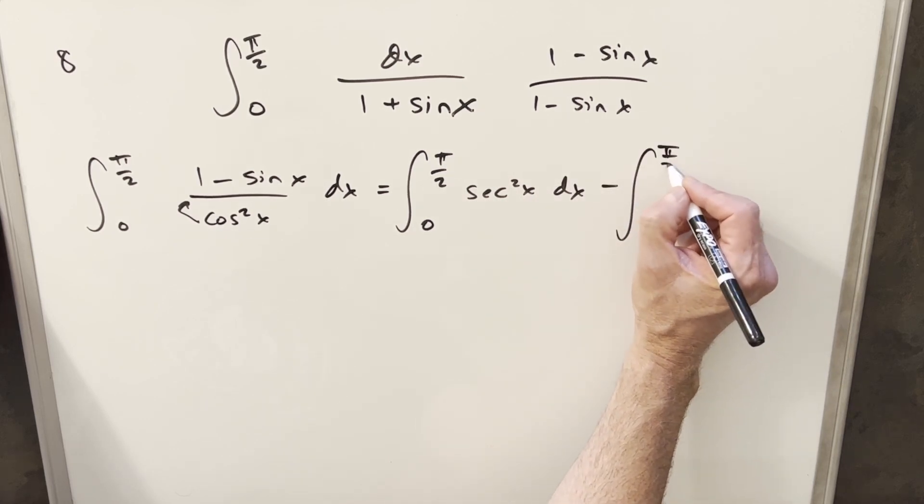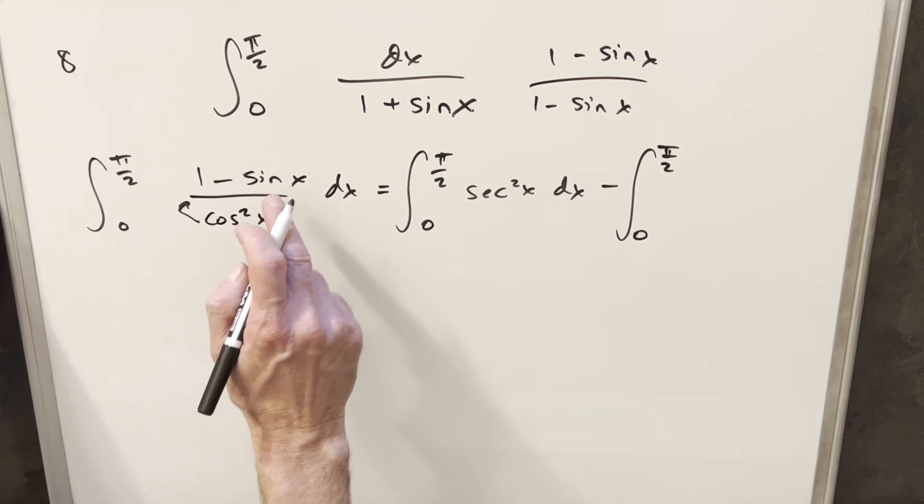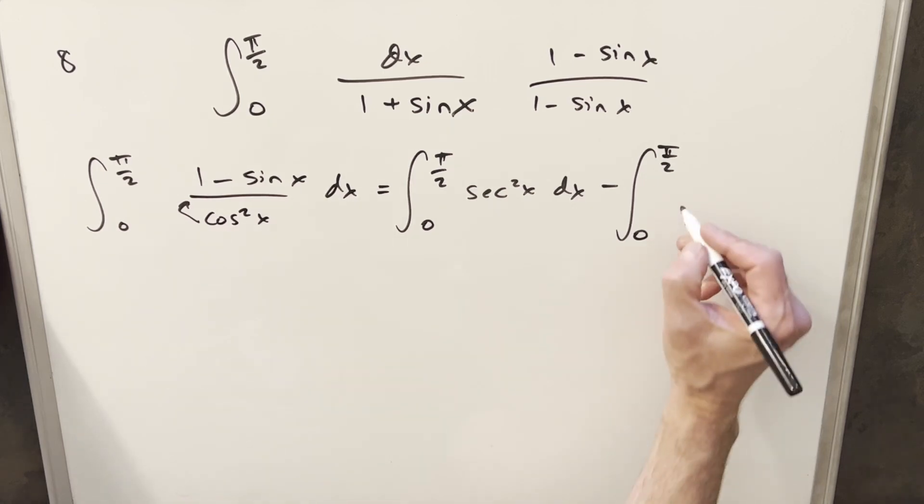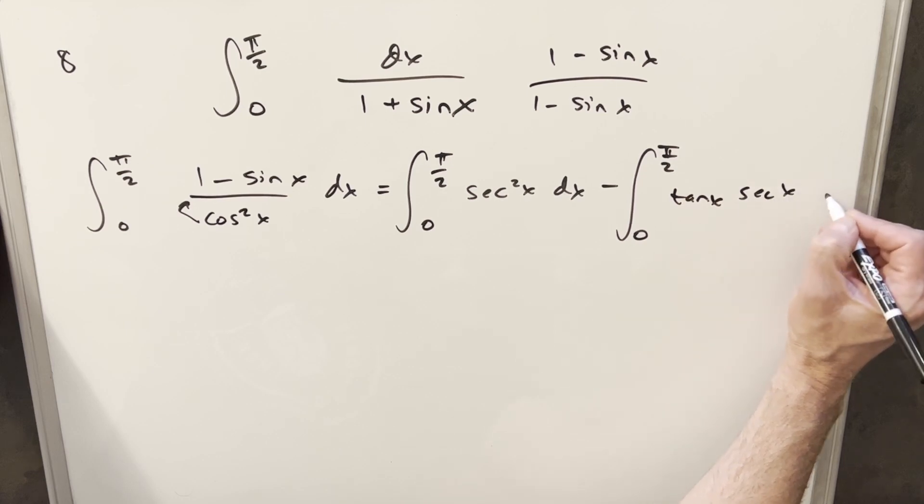And then for this second integral, we'll split it into two integrals. For the second one, I can write this sine over cosine squared x. I can break the cosine into two pieces and write this as tan x times secant x dx.